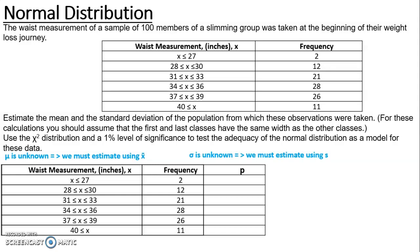Inputting this data into my calculator — bearing in mind they told us that for these calculations we should assume the first and last classes have the same width as other classes — I am going to assume the first class is 25 to 27 and the last is 40 to 42, both two-wide the same as the other classes. By putting that data into my calculator I get a normal distribution with mean x-bar of 34.91 and a variance of 3.777 squared. Those are the estimations I will use for my normal distribution.